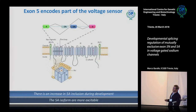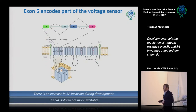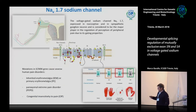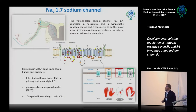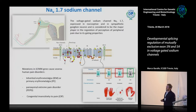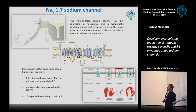Exon 5A — the adult form — is more positively charged than the neonatal form, so the adult form of the channel is more excitable. As a paradigm for all the other five channels that have the duplication of this exon and the mutually exclusive splicing, we chose the NAV1.7 sodium channel, encoded by the SCN9A gene, because of its fascinating connection to pain sensation.